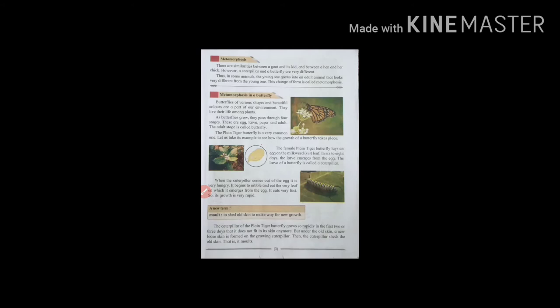In six to eight days, the larva emerges from the egg. The larva of a butterfly is called a caterpillar. When the caterpillar comes out of the egg, it is very hungry. It begins to nibble and eat the very leaf on which it emerged from the egg. It eats very fast, so its growth is very rapid.